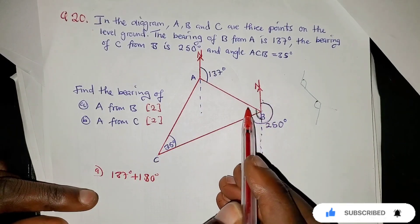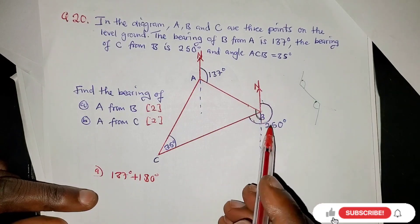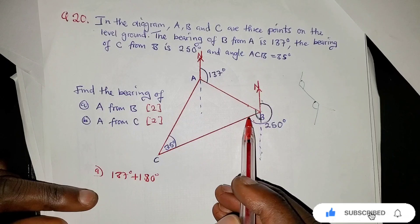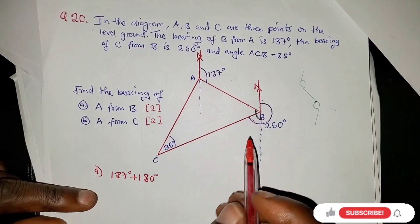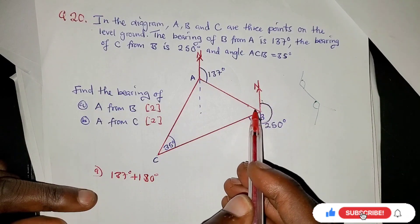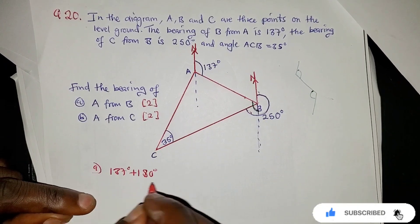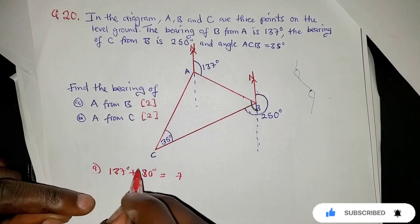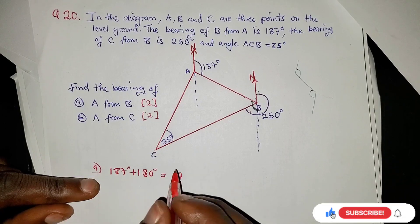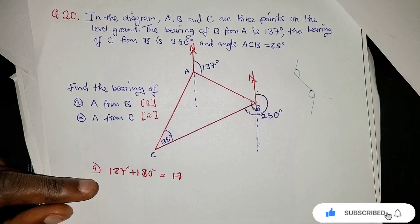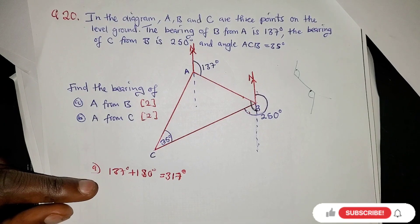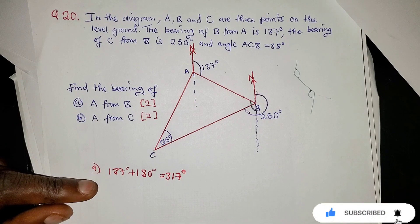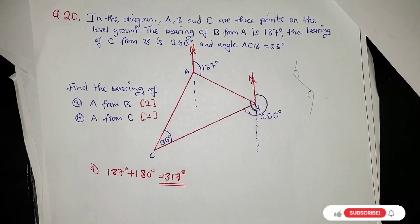The bearing of C from B is given as 250°, and the straight line gives 180°, so this angle here is 170°. Adding 137 plus 180: 7 plus 0 is 7, 3 plus 8 is 11, carry 1, giving us 317°. So the bearing of A from B is 317°.